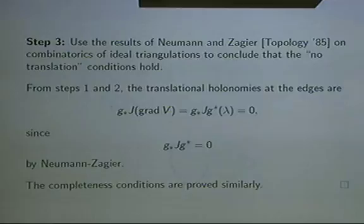This actually proves that if you maximize volume, we're actually getting a hyperbolic structure with no translations along the edges. You can do a similar kind of check to show that the completeness conditions are satisfied — that uses some more combinatorics from Neumann and Zagier. And that's the basic idea for this theorem.